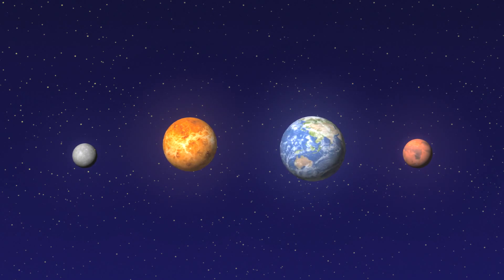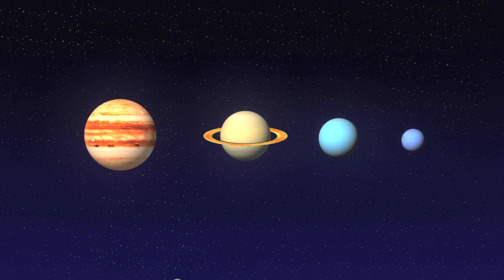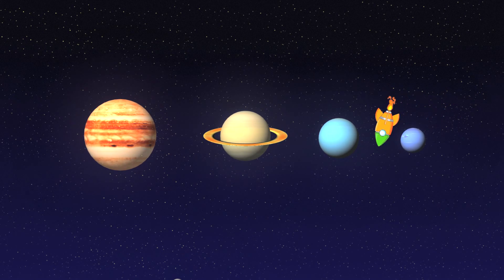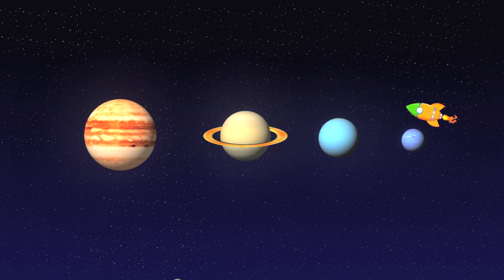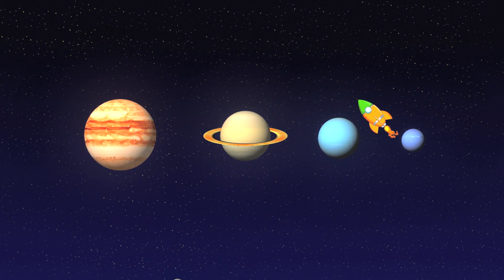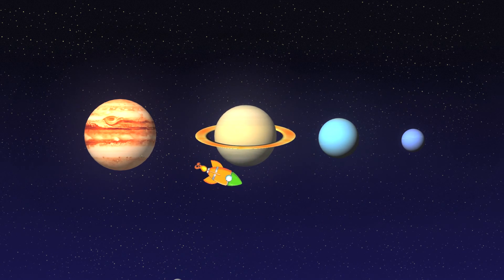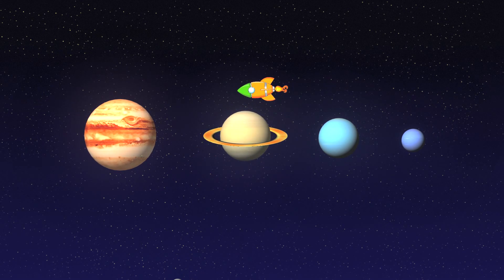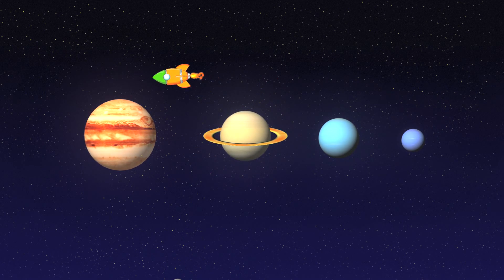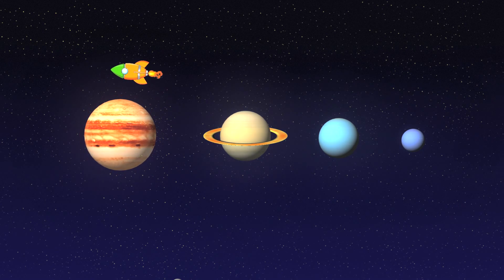Further away from the Sun are four huge planets: Neptune, Uranus, Saturn, and Jupiter, the biggest one in the whole solar system.